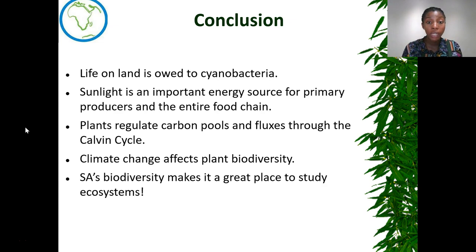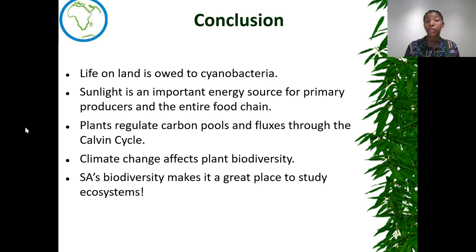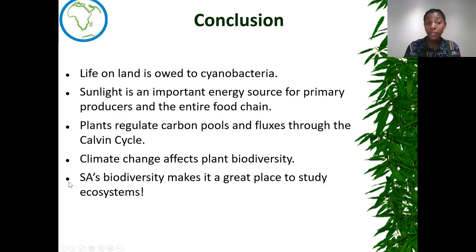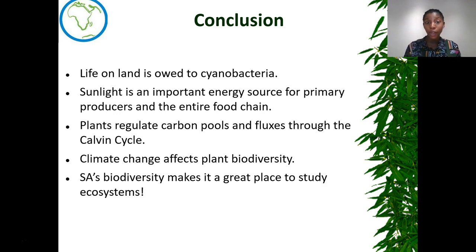To conclude our talk today: life on earth is owed to cyanobacteria, and sunlight is an important energy source for primary producers and the entire food chain. Plants regulate carbon pools and fluxes through the carbon cycle, but climate change affects plant biodiversity drastically. South Africa's biodiversity actually makes it a great place to study ecosystems. Stay tuned for the next talk that will teach you more about biodiversity.